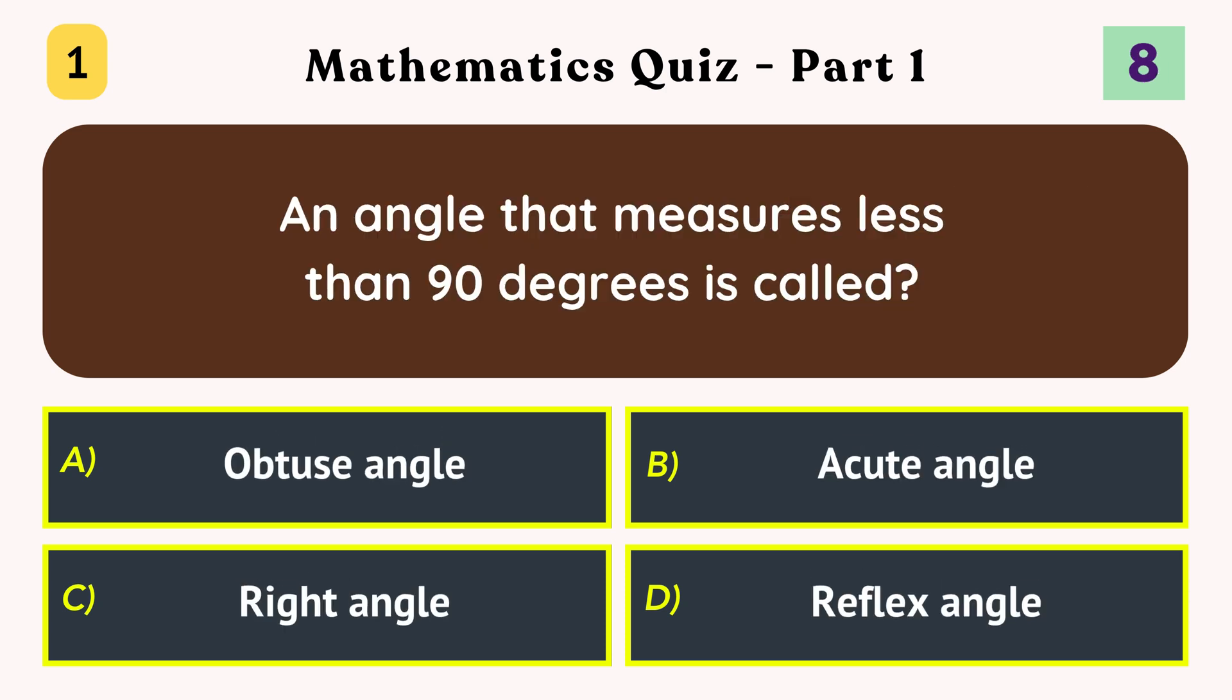An angle that measures less than 90 degrees is called acute angle.